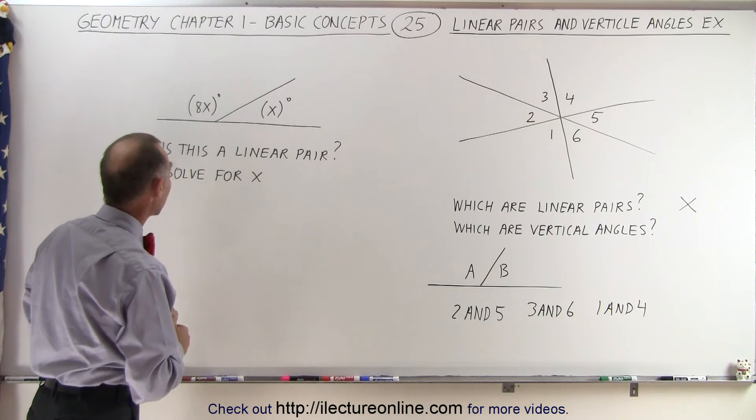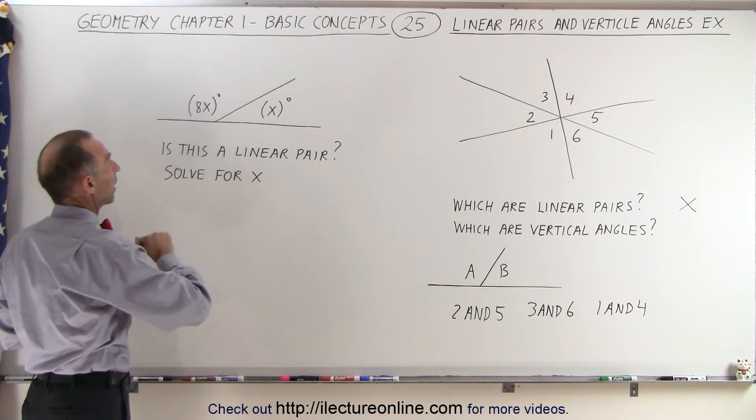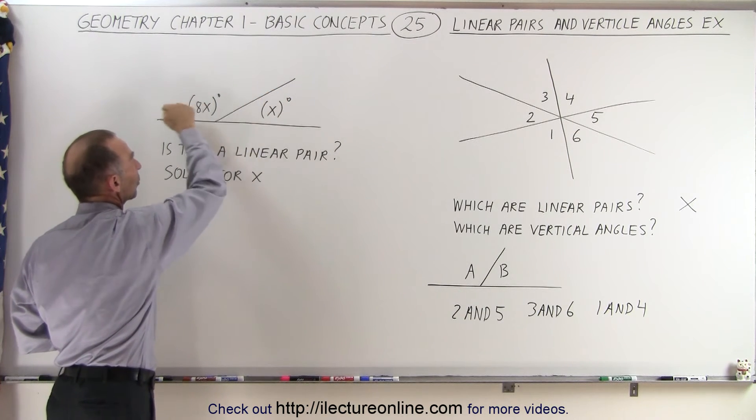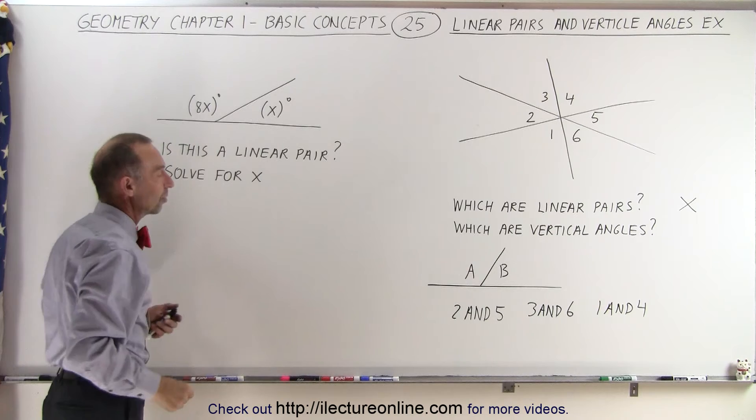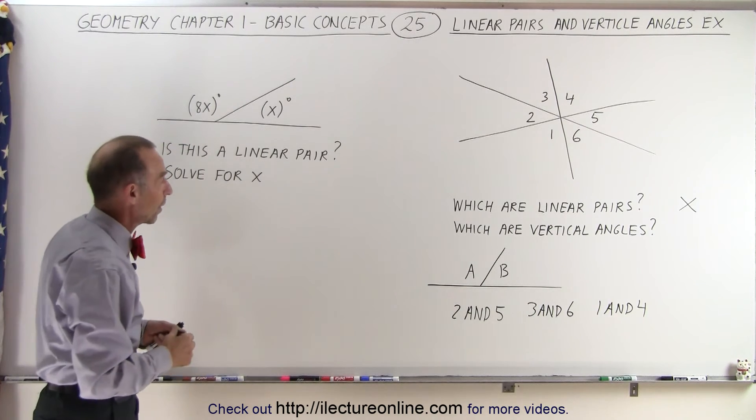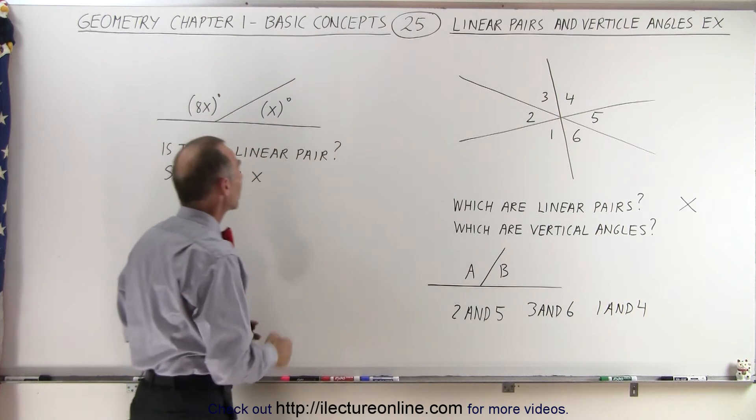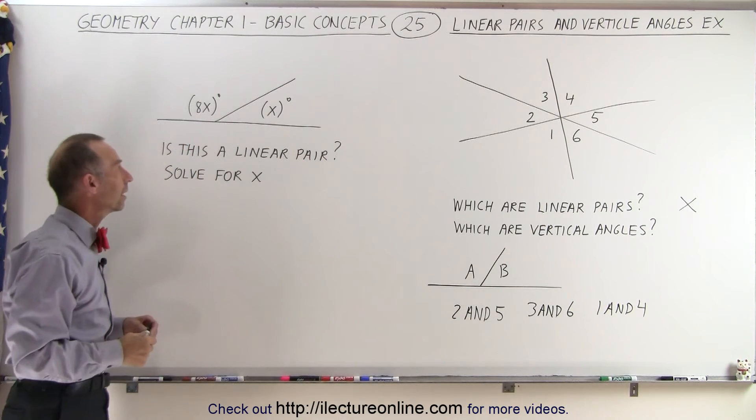Now let's come over here and the question is, is this a linear pair? You can see clearly that when we add this angle together with this angle, we have a 180 degree sum. So therefore, by the definition of a linear pair, this would be considered a linear pair.